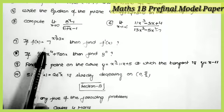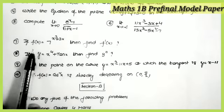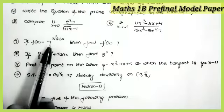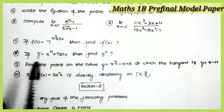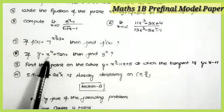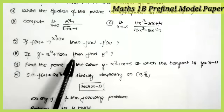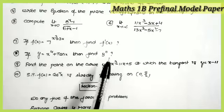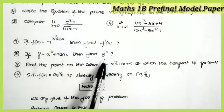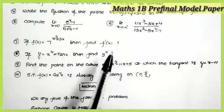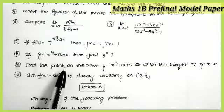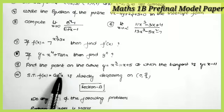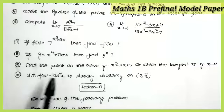The seventh question is from Differentiation: if f(x) = 7^(x³ + 3x), find the value of f′(x). The eighth question: if y = x⁴ + tan x, find y double dash — the second derivative. Both are important models from Differentiation. The ninth question is from Applications of Derivatives (Tangent and Normal), and the tenth is from increasing/decreasing functions.